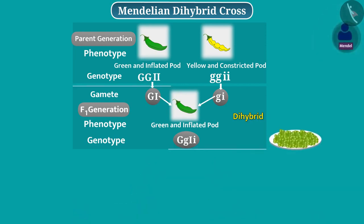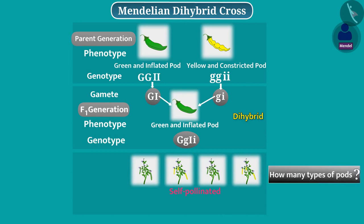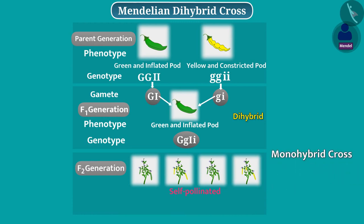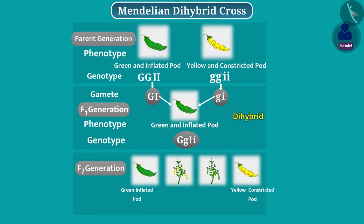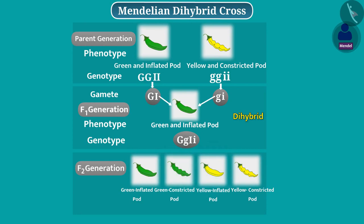Mendel grew plant seeds of F1 generation and self-pollinated the plants. On the basis of monohybrid cross, we can say that some of the pods produced in F2 generation will be green and inflated and some pods will be yellow and constricted. But in F2 generation, four types of pods were produced. The F2 generation had different combinations of colour and shape, from which two combinations were the same as that of parents and two combinations were new. All these pods were in the ratio of 9:3:3:1. This ratio is called dihybrid ratio.